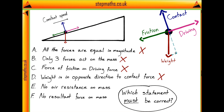Statement E states that there is no air resistance on the mass. There might be no air resistance, in which case the frictional force would just be due to friction from the surface. But if there was air resistance, it would be included in that frictional force too. So there could or could not be air resistance — it's one of those statements which could be true but is not necessarily true. So it's also false.